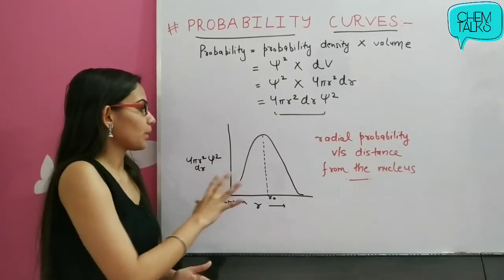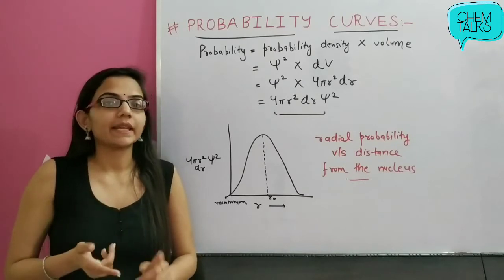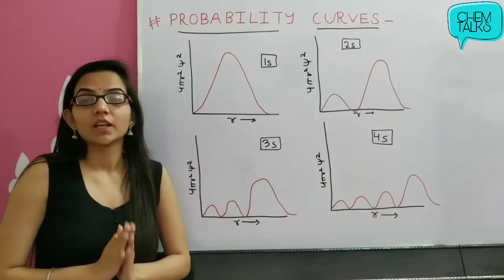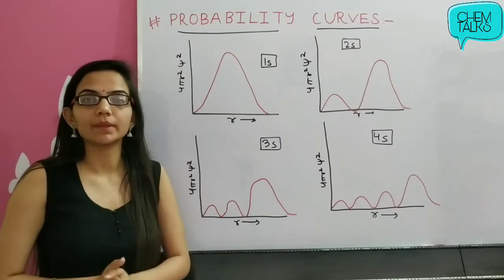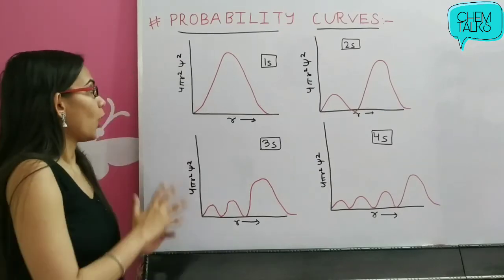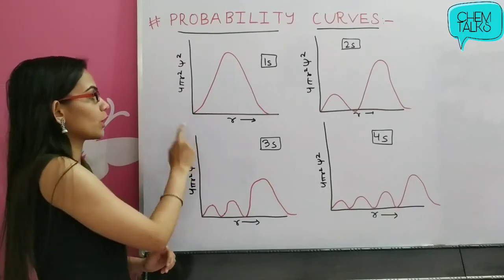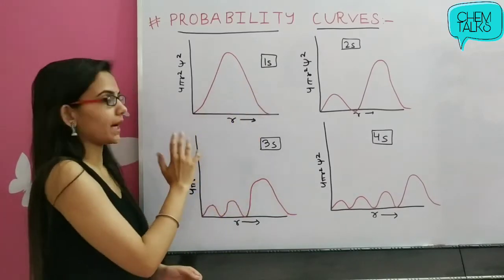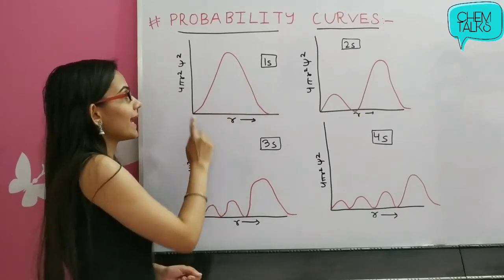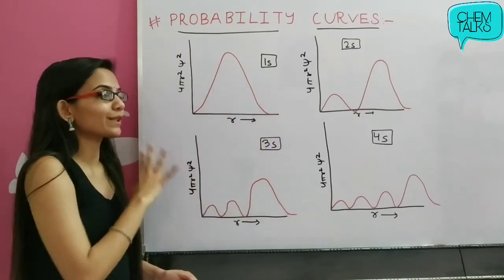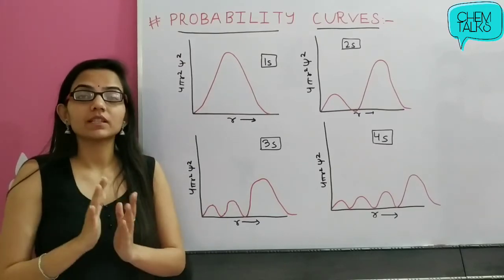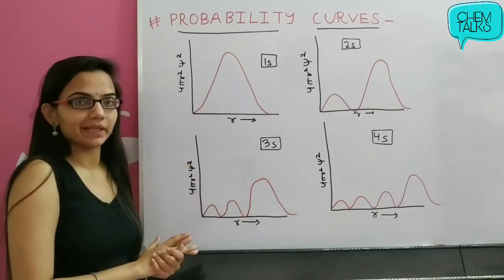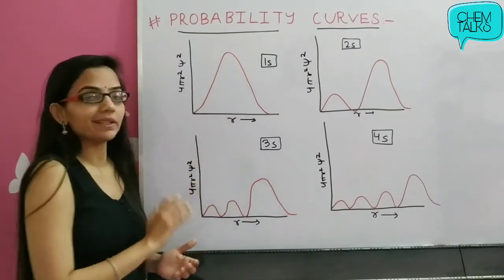Now we see these curves for different subshells. We plot 4πr²ψ² against distance from the nucleus. How do these graphs look? For the 1s graph, there is one high maximum probability region and there are no nodes. What are nodes? These are the areas where the probability of getting electrons is negligible or zero. So there is no node in the 1s diagram, and there is one high probability region.